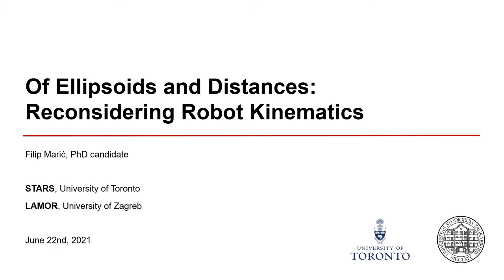Hello, everyone. My name is Filip Maric and I'm a PhD candidate at the Space and Terrestrial Autonomous Robotic Systems Lab at the University of Toronto, jointly with the Laboratory for Autonomous Mobile Robotics at the University of Zagreb. The title of my talk today is Of Ellipsoids and Distances: Reconsidering Robot Kinematics.